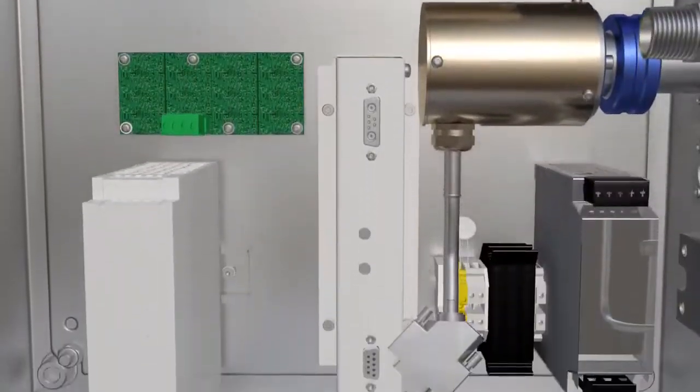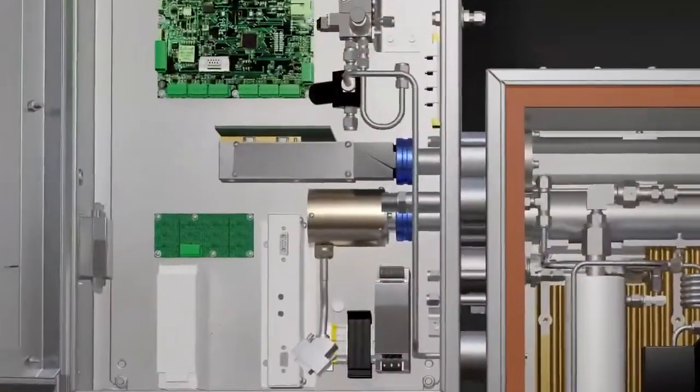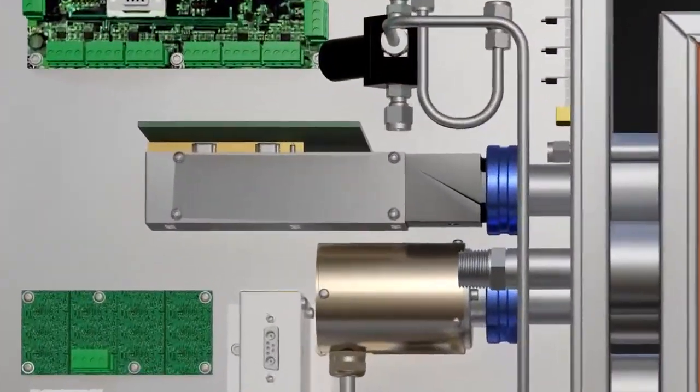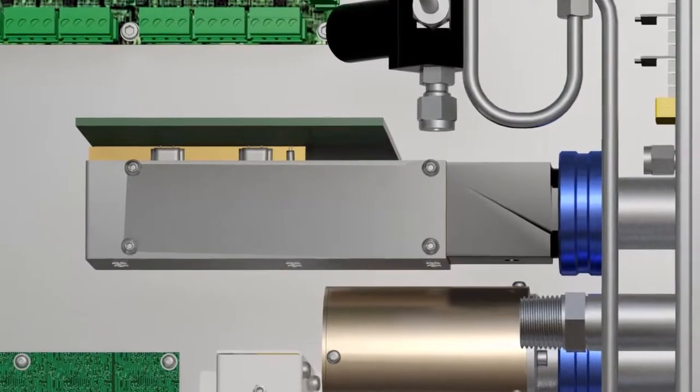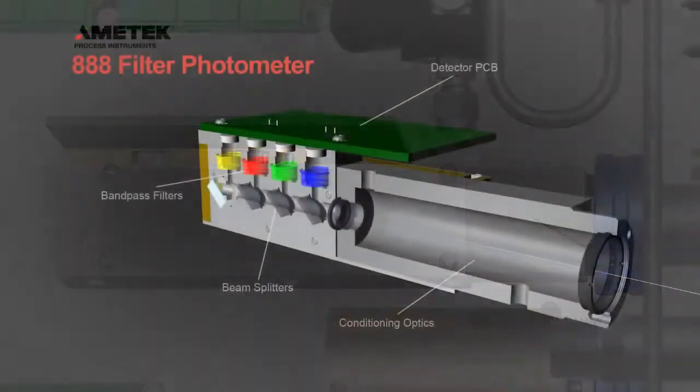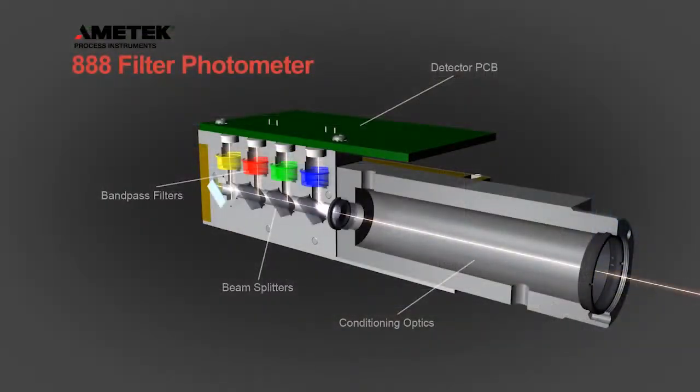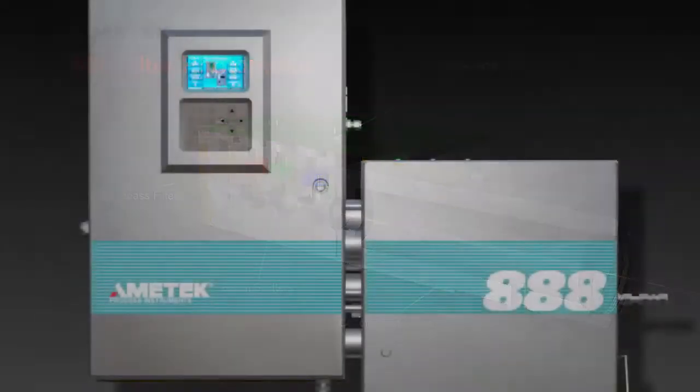The Model 888, the successor to the Model 880 NSL, uses field-proven and highly reliable UV technology to accurately monitor the hydrogen sulfide and sulfur dioxide concentrations in sulfur recovery tail gas.